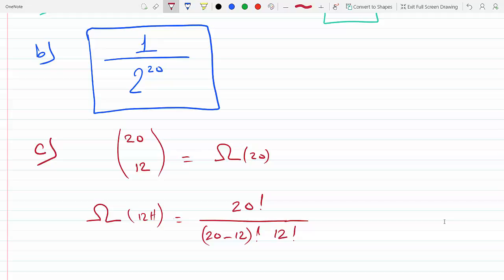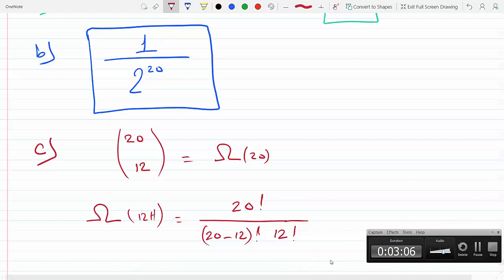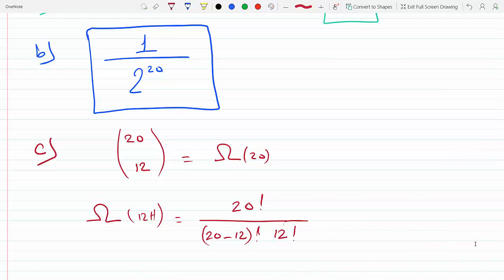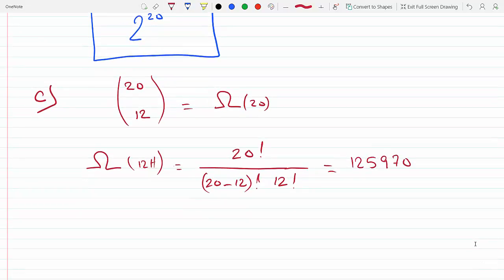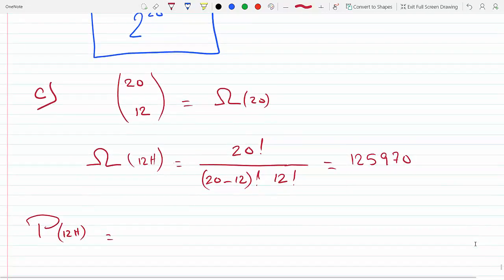Okay, and then if you plug this in you will get 125,970 ways. And now if I need the probability of getting 12 heads, I could just divide this by the multiplicity of all, by all the different ways these coins can land. So 125,970 divided by 2 to the 20, and you would get